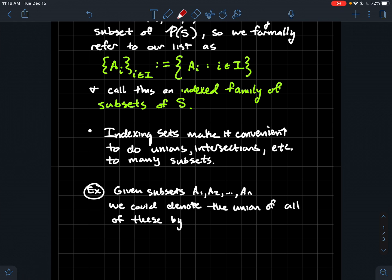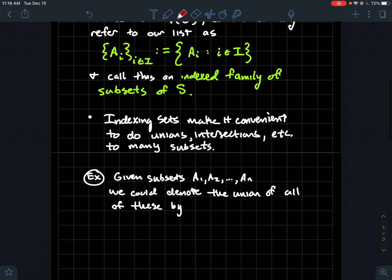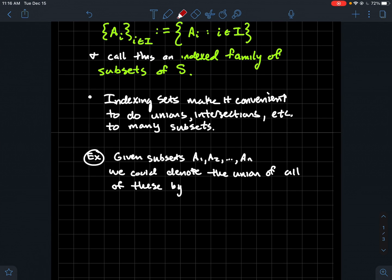Let me give you an example. If I have some subsets, say A1 through An, what if I wanted to take the union of all of those? One option you have is just to do A1 union A2 union and do some dots, which indicate that it keeps going until you get to the last one. But that's a little bit cumbersome, a little bit long winded.